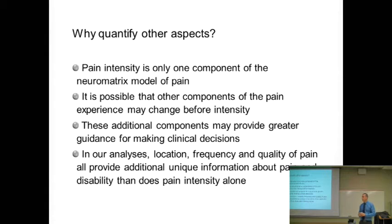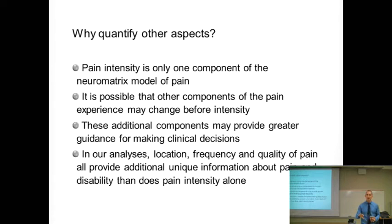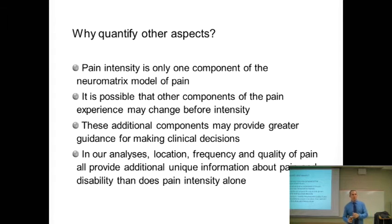It's possible that other components may also change before intensity. So if all I was doing was using pain intensity to measure change over time, it's possible that intensity stays consistent, but maybe it's less frequent. Maybe the quality has changed from a burning stab to a dull ache. Maybe the pain used to go all the way down my arm to my lateral one and a half fingers, and now it's more up in my shoulder. So the location has changed.